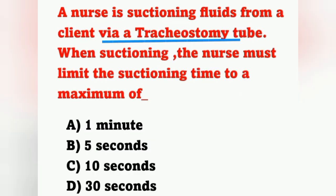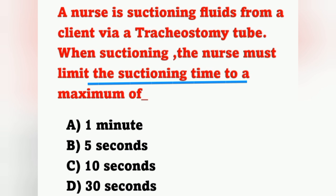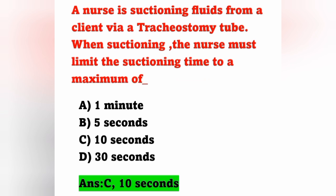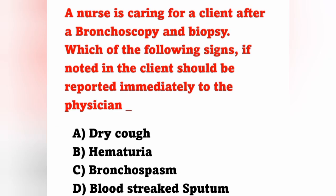Next question: a nurse is suctioning fluid from a client via a tracheostomy tube. The nurse must limit the suctioning time to a maximum of — option A one minute, option B five seconds, option C 10 seconds, option D 30 seconds. The correct answer is 10 seconds, option C, because prolonged suctioning can cause hypoxemia — decreased oxygen in the blood — and may lead to bradycardia. The nurse should also pre-oxygenate the client before suctioning.